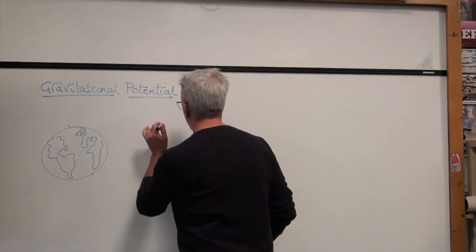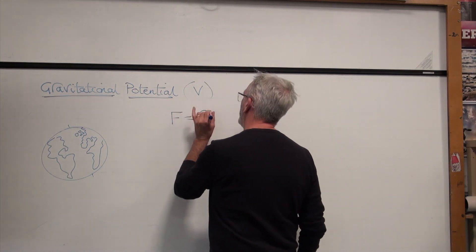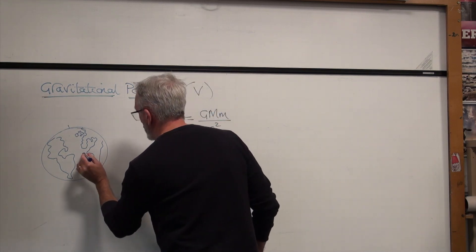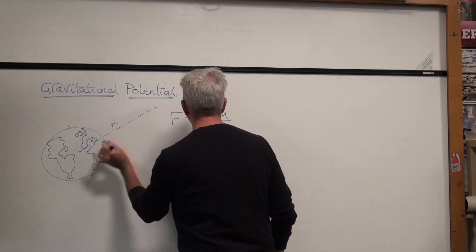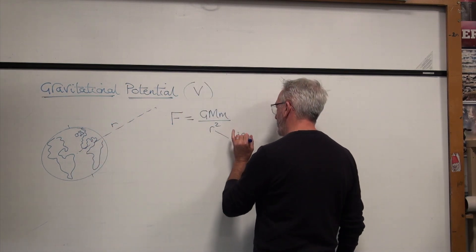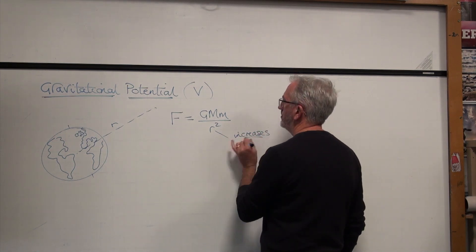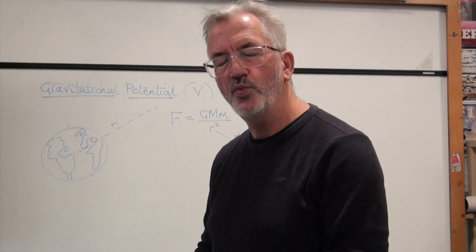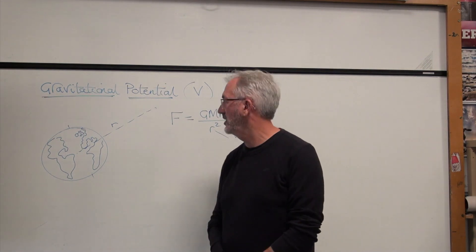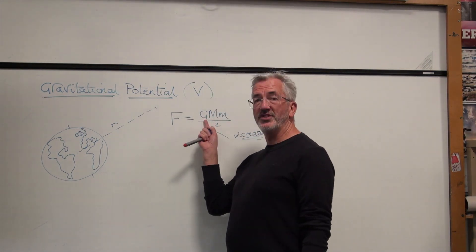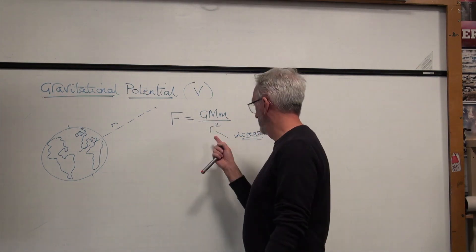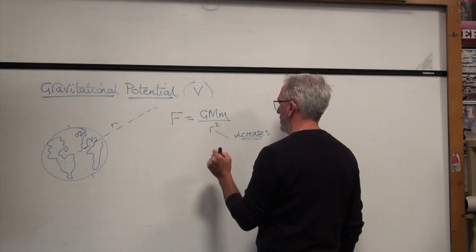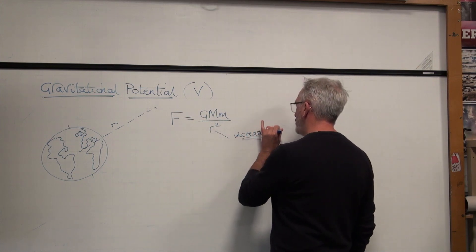This is tricky, because as we've said already, the gravitational force — GMm over R squared — the further away you go from the Earth, as R increases, when will the gravitational force of attraction be zero? When will you escape from the Earth's gravitational field? Well, that force will only be zero when R increases to infinity.